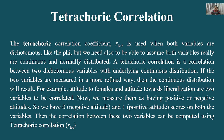आपको समझना होगा कि जो चर normally distributed होते हैं वो normal probability curve को follow कर रहे हैं — मतलब maximum area बीच में है और extreme cases कम होते हैं। Continuous variable, discrete variable, और dichotomy — जब हम एक आँकड़े को दो categories में बाँटते हैं वो dichotomy है। Natural dichotomy होती है जैसे male/female, और artificial dichotomy जैसे pass/fail।